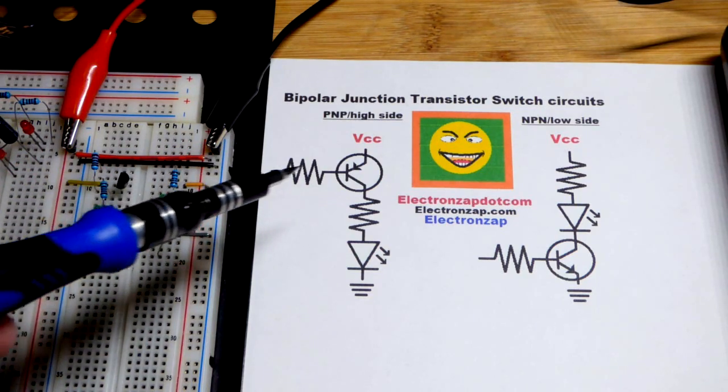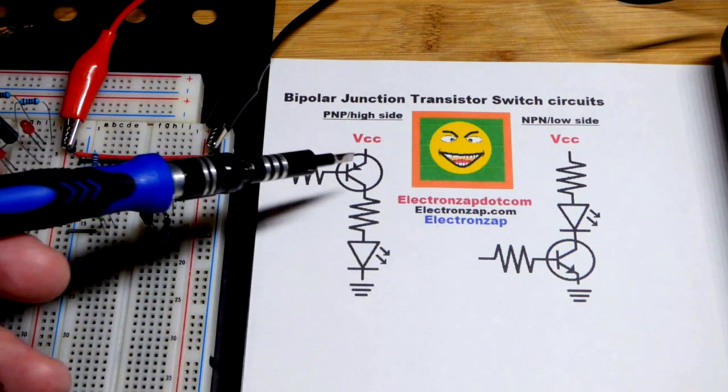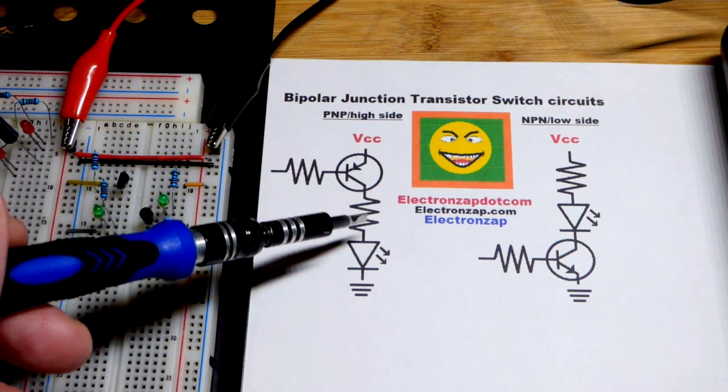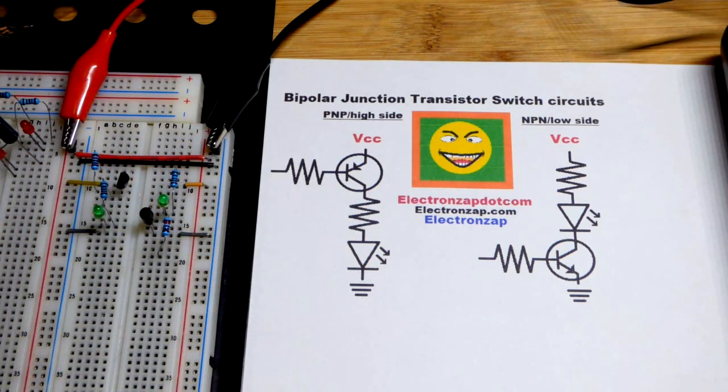We're going to use 10 kilo ohm resistors to both bases. And a tiny bit of current that way allows it to conduct freely, but the resistor and LED will limit current.